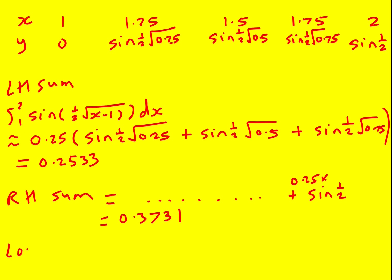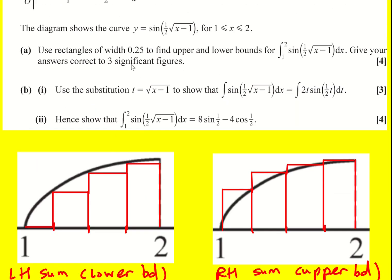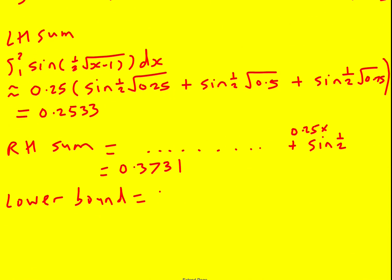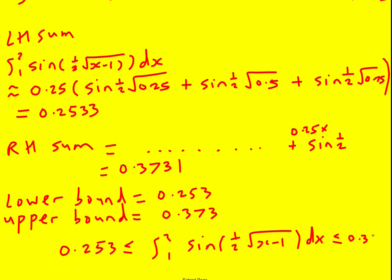So therefore the lower bound, I'm just finishing the question now, it's asked me for the upper and lower bounds correct to three significant figures. So the lower bound is going to be 0.253 and the upper bound is 0.373. When I did it I decided to write it as an inequality, quite nice to get this range using the rectangle rule.